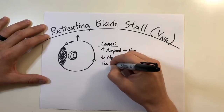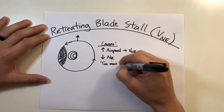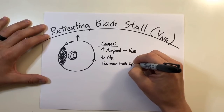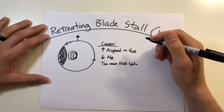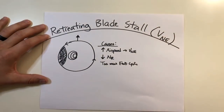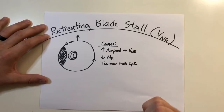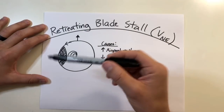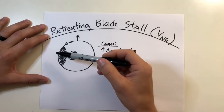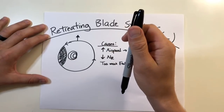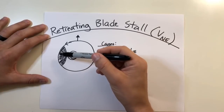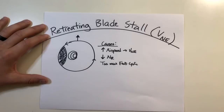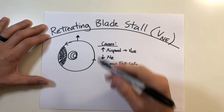The next cause would be too much forward cyclic. Usually too much forward cyclic is a result of too much aft CG — aft center of gravity — in the helicopter. This causes excessive forward cyclic input to compensate. When you apply forward cyclic, it increases the pitch at the nine o'clock position. If you're already at higher speeds or approaching a stall condition, excessively high forward cyclic agitates the stall region with even higher angles of attack.